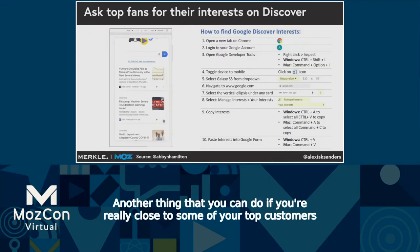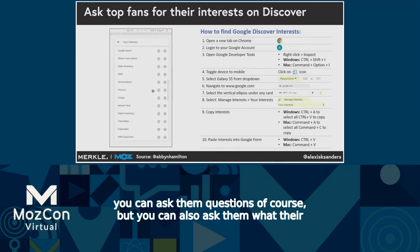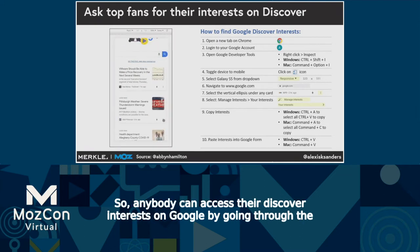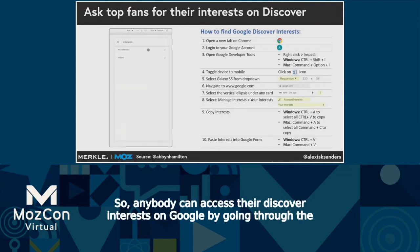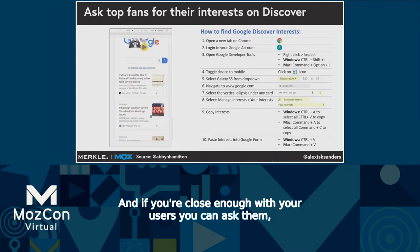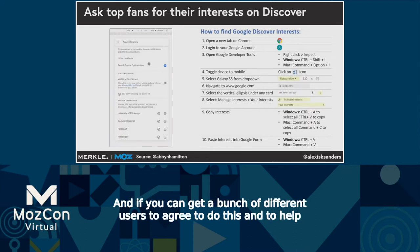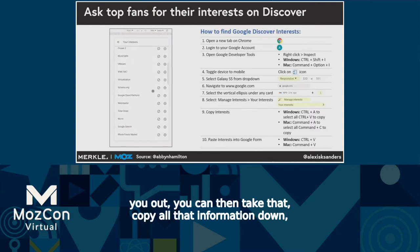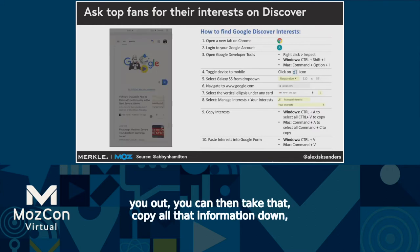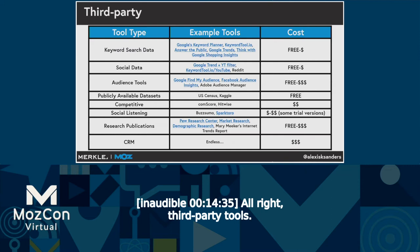Another thing you can do if you're really close to some of your top customers is ask them what their Google Discover interests are. Anybody can access their Discover interests on Google by going through the mobile experience, clicking on the three little dots and checking out what your interests are. If you're close enough with your users and can ask them, it may be a good area to explore commonalities. If you can get a bunch of different users to agree to help you out, you can copy that information down, count frequencies, and see if anything interesting appears.